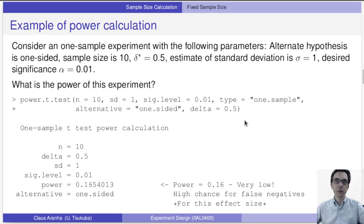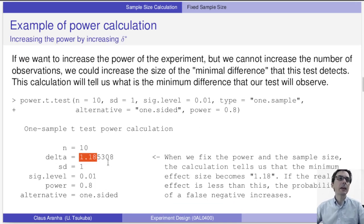So in the previous test, our delta was 0.5. Our test is not powerful enough to detect the differences of 0.5, but our test is powerful enough to detect the difference of 1.18. If we want to detect smaller differences with our test, we need more observations. So here's the trade-off. Do we want to detect smaller differences or can we do more observations?